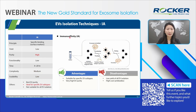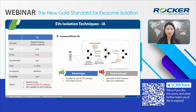Next, we have immunoaffinity, IA. It uses antibodies to target specific EV surface markers like CD9, CD63, and CD81. These antibodies can be immobilized on supports such as microplates, columns, or magnetic beads. IA is highly specific, making it ideal for isolating specific EV subtypes such as CD63-positive EVs. However, since there is no universal EV marker, IA cannot capture all EVs in the sample, leading to lower yield. Additionally, the high cost of antibodies limits its scalability.